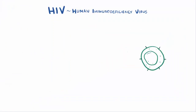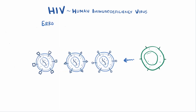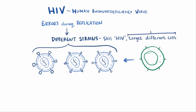HIV is notorious for making errors when it replicates, and during infection it can mutate to create slightly different strains. These viruses are all still considered HIV, but they behave slightly differently and target different cells in the host. That host cell preference is called viral tropism.